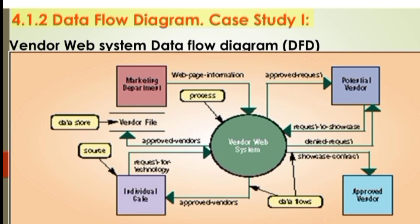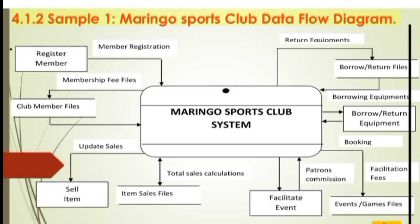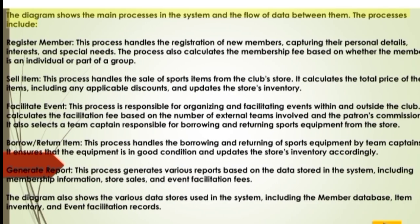Sample two: the Maringo Sports Club data flow diagram. The system includes processes such as register member, sell item, facilitate event, and borrow/return equipment. Data stores include item sales files, borrow/return files, events and games files, club member files, and membership fee files. The diagram shows the main processes in the system and the flow of data between them.